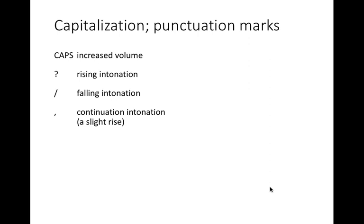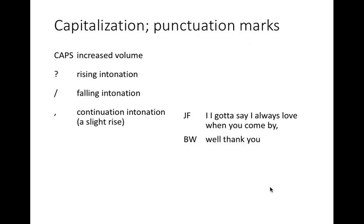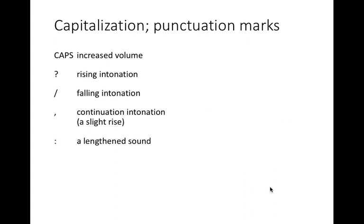A comma is used to indicate a slight rise, which indicates that the person probably intends to continue saying more. As in, 'I gotta say, I always love when you come by.' It's not quite a rising intonation, but it sounds as though he's not finished with what he's saying. A colon is used to indicate a lengthened sound — for example, 'never said hippity' in the second line there.